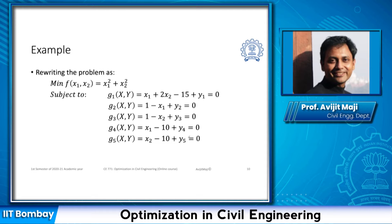Once we add the slack variables, our constraints are going to change as shown here for each case. Our multivariable inequality constraint is now transformed into a multivariable equality constraint.